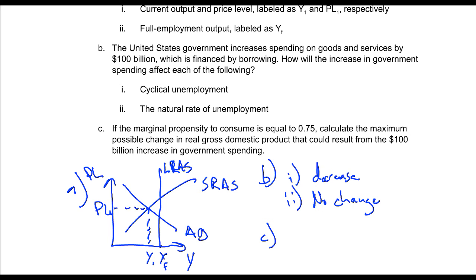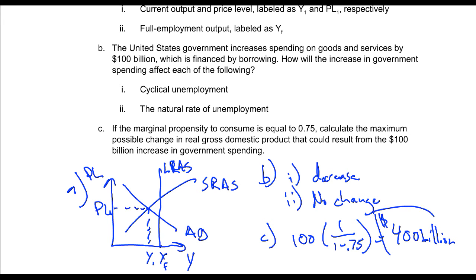If the marginal propensity to consume is equal to 0.75, calculate the maximum possible change in GDP that could result from the $100 billion increase. That's the same problem we had before. We would take the $100 billion times our multiplier, which is 1 over 1 minus our MPC, which is 0.75. This is 1 over 0.25. 1 divided by 1 fourth is the same as 1 times 4 over 1. The multiplier is 4, and we get $400 billion.